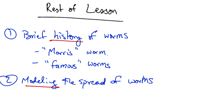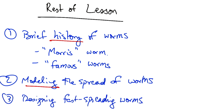We'll then talk about how to model the spread of a worm in terms of scanning and infection rates using analogies from epidemiology. Finally, we'll talk about design techniques for designing super fast spreading worms, and we'll look at an example of a super fast spreading worm.